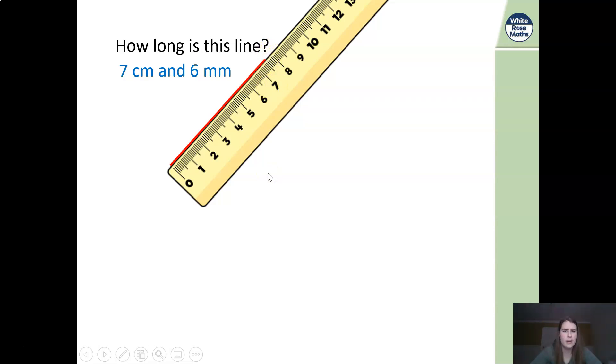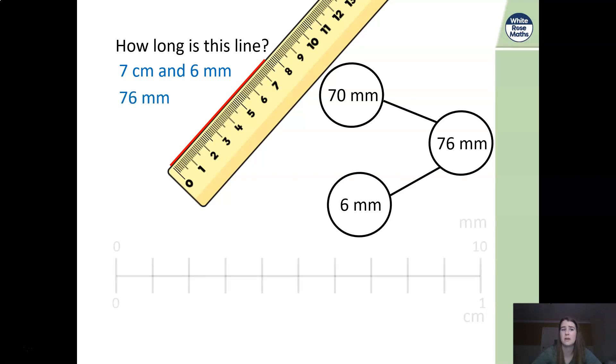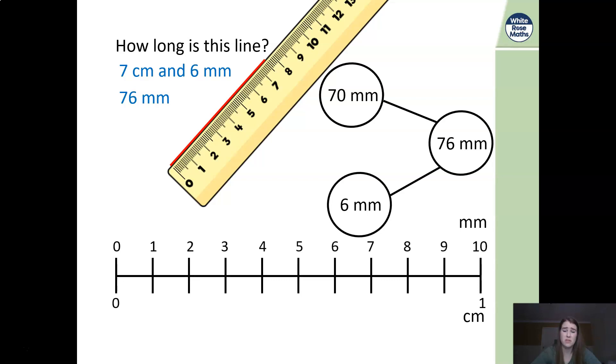Now there's more than one way for me to be able to write that. I want you to pause the video. How else could I write 7 centimeters and 6 millimeters? If I partition this, can I change it all into millimeters? I've got 70 millimeters and 6 millimeters, that's 76 millimeters. If I then have a look at my conversions, I know that if 1 millimeter is the same as the tenth and I counted these all along, I know that I've got 7 whole lots and 6. I've got 7.6 centimeters. So I could write it as centimeters and millimeters, millimeters or centimeters. There's three different ways there that I could write that.